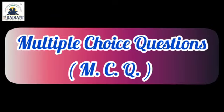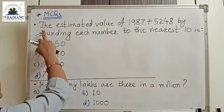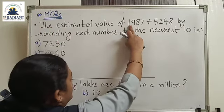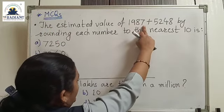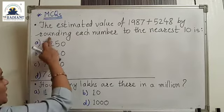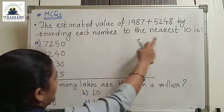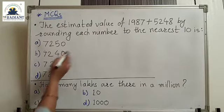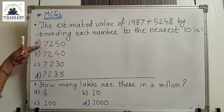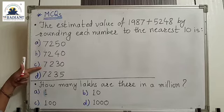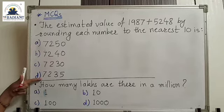Today we are going to learn some MCQs. The first MCQ is: the estimated value of 91,987 plus 5,248 by rounding each number to the nearest 10 is. The options are: 7,250; 7,240; 7,230; or 7,235.